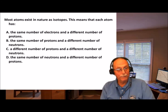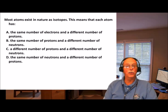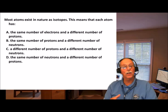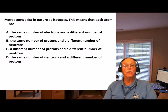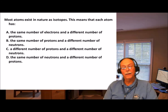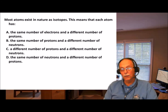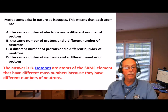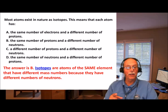Here's the first question: Most atoms exist in nature as isotopes. This means that each atom has — A: the same number of electrons and a different number of protons; B: the same number of protons and a different number of neutrons; C: a different number of protons and a different number of protons. If you paid attention, you know the correct answer is B. Isotopes are atoms of the same element that have different mass numbers because they have different numbers of neutrons.